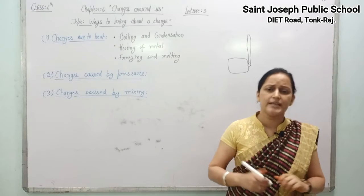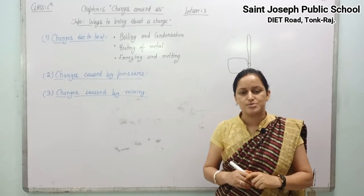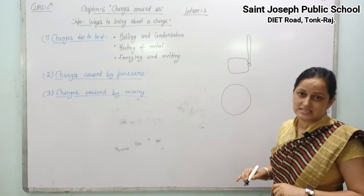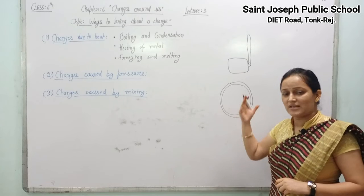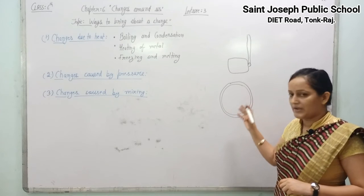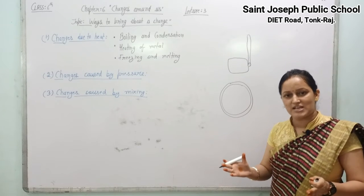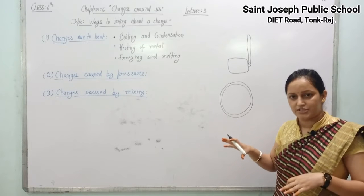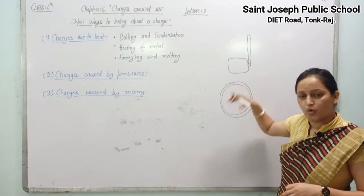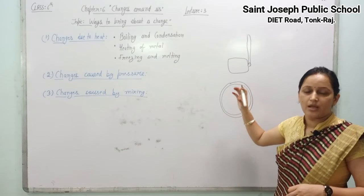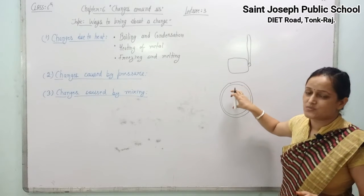We can also see this same principle in how cartwheels are prepared. The wooden wheel is bigger in size, and the iron rim is smaller in size. The iron rim is heated first so that it expands. At that time, it is fitted over the wooden wheel. Then water is poured over it, so the metal rim contracts and gets fixed tightly on the wooden wheel. This is how the cartwheel is assembled.